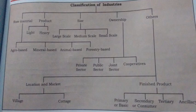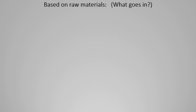Moving into classification, we classify industry based on five to six aspects: raw material is number one, product is number two, size of industry is number three, ownership is number four, and location and market is number five, with finished product being number six. So there are six major classification criteria for industries. Starting with number one — raw material: what goes into the industry.